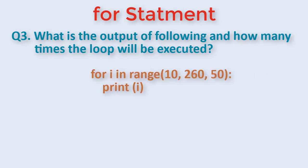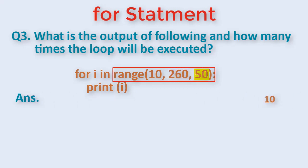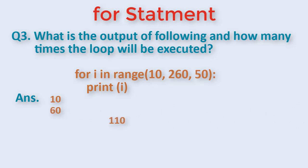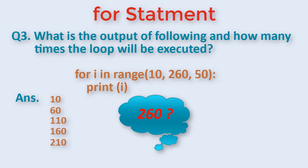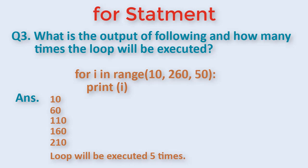Another similar question is: what is the output and how many times will the loop be executed? Here, if you see the range function, the starting value is 10, the stop value is 260, and the increment is 50. This loop will print 10 first, then increment by 50 and print 60, then 110, then 160, then 210. Will it print 260? The answer is no — the stop value is not included in range values, so it can print only till 259. The loop will execute 5 times with this output.